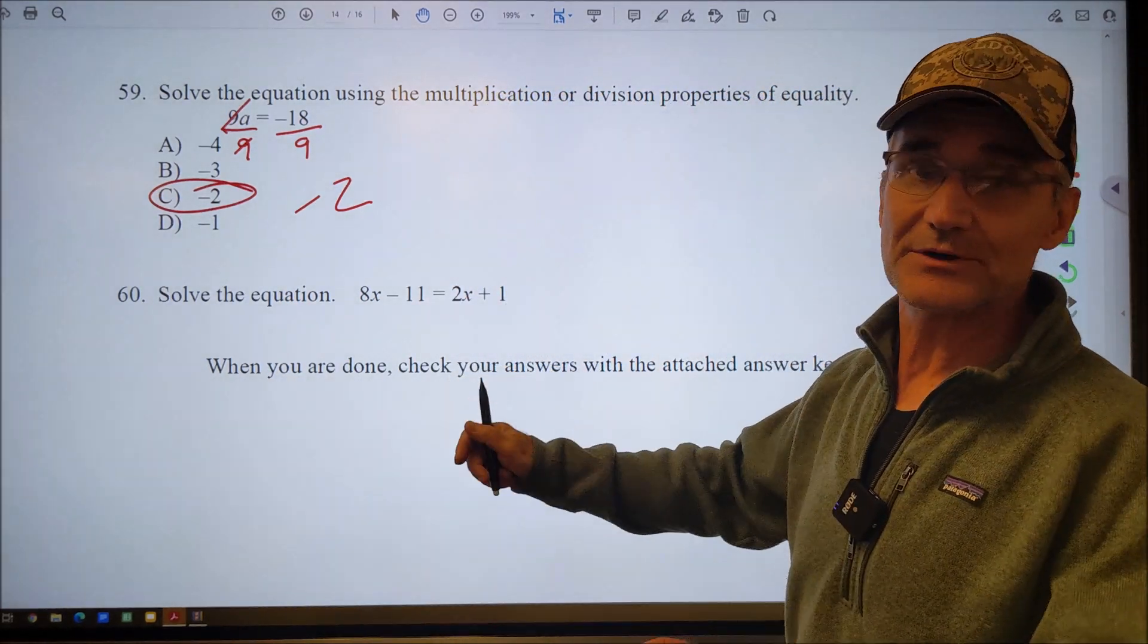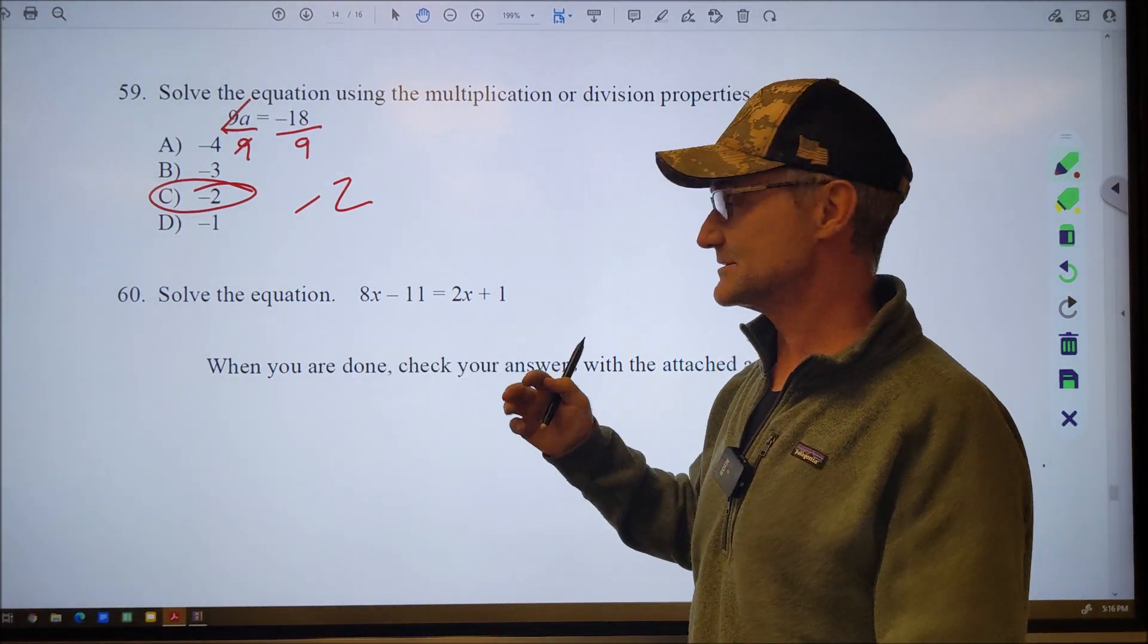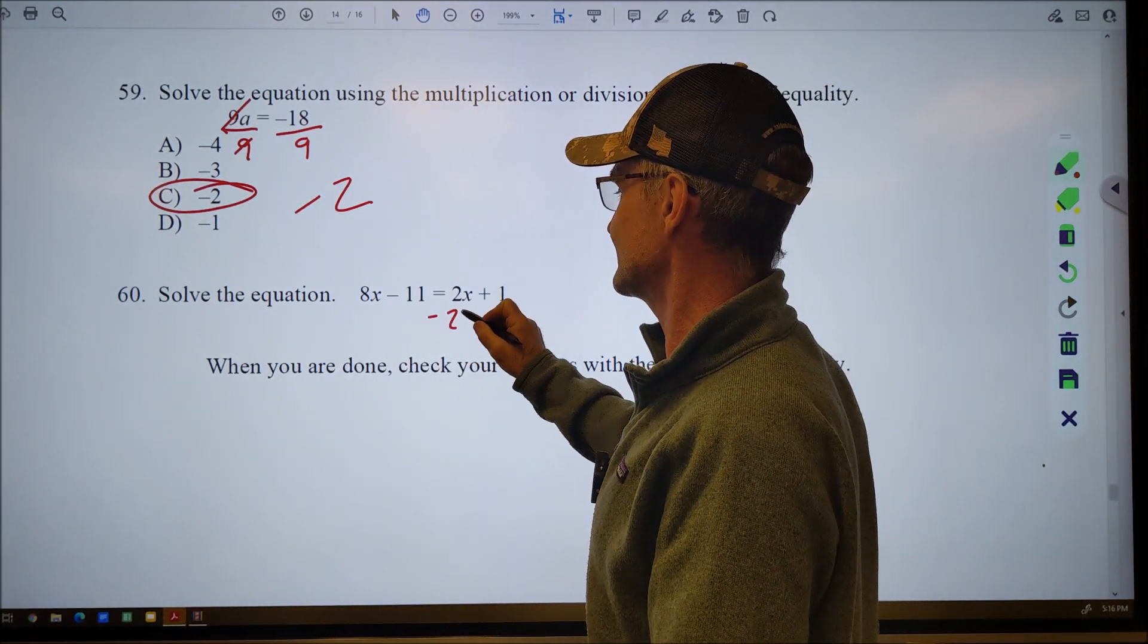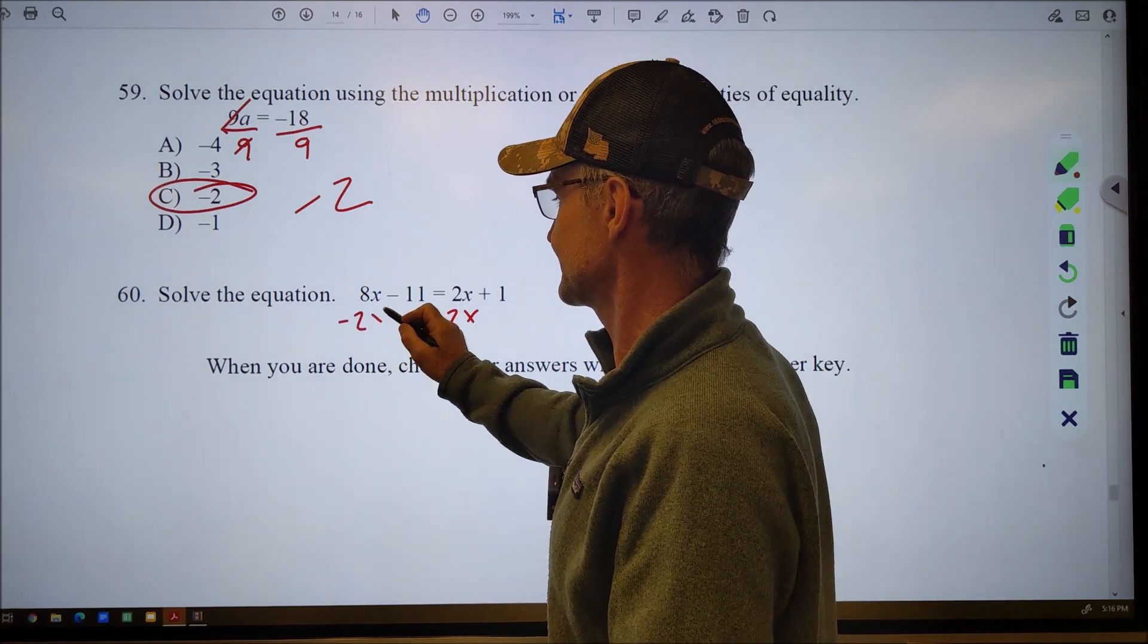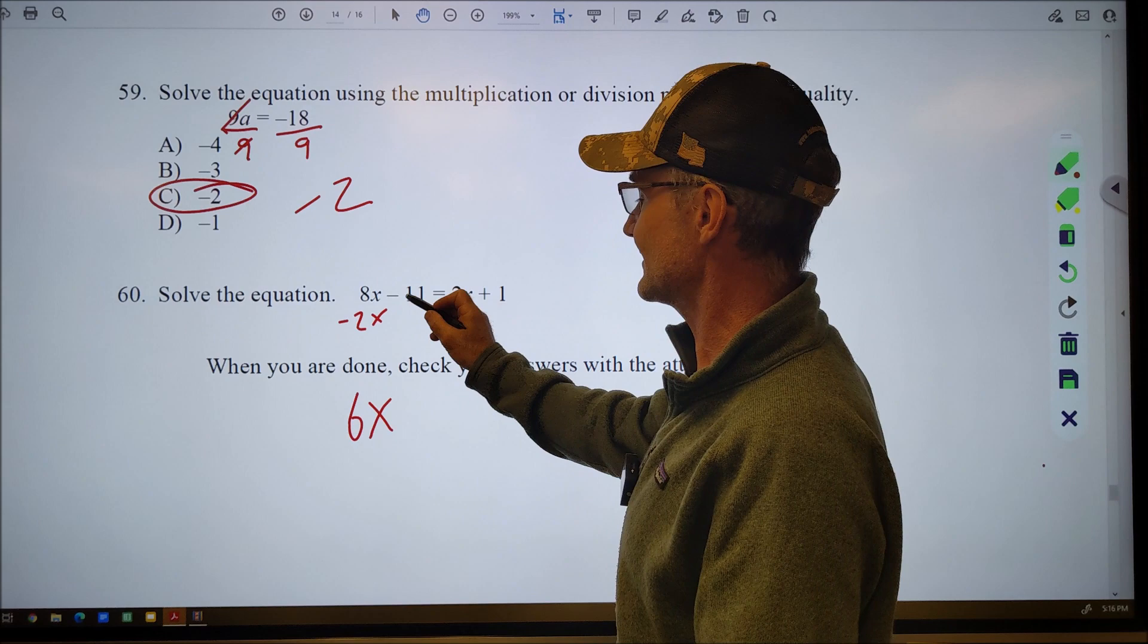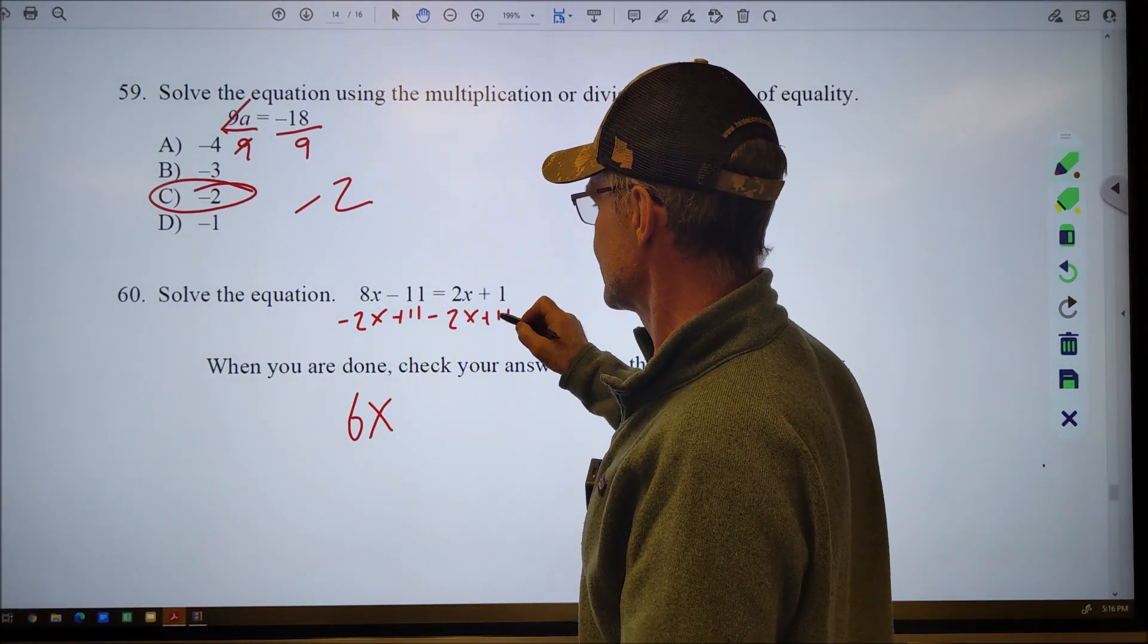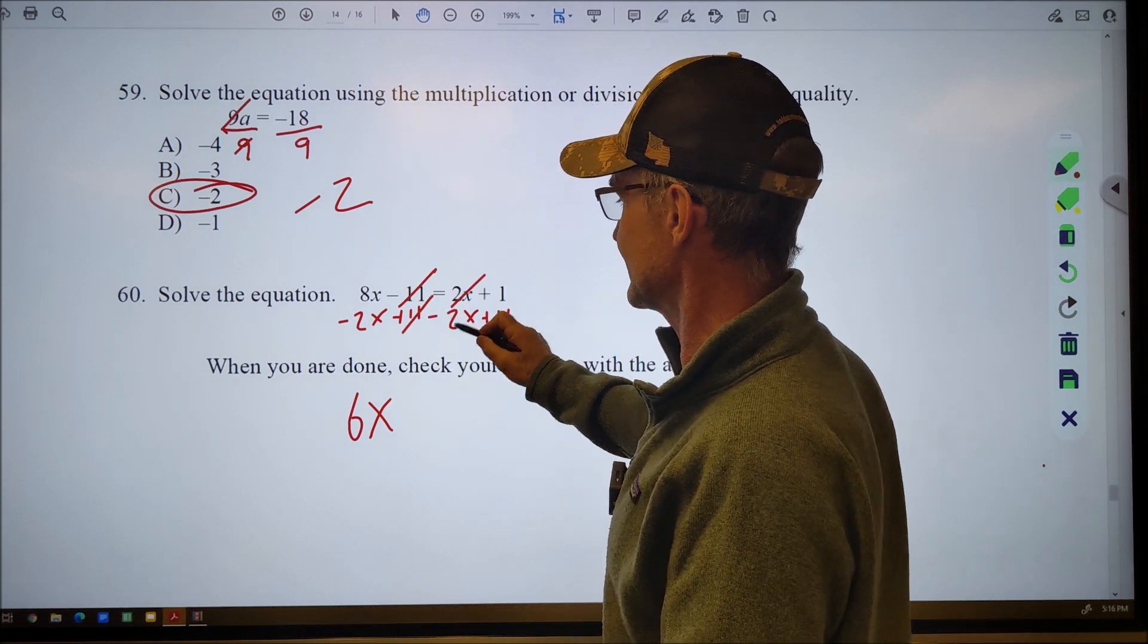And our last equation. I'm going to put both those things together. I need to get my x's on one side, my numbers on the other. So I'm going to subtract 2x from both sides. 8x minus 2x is 6x. I have a negative 11 here. I want to get rid of that. I'm going to add 11 to both sides. That'll cancel with that. That's already gone. 1 and 11 is 12.